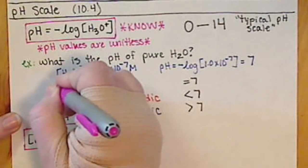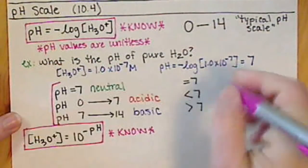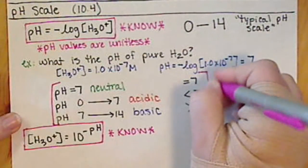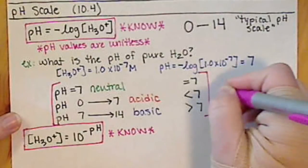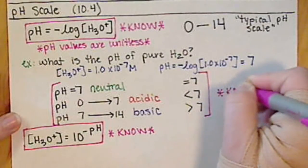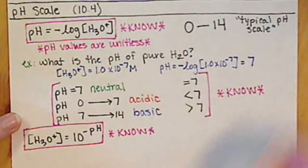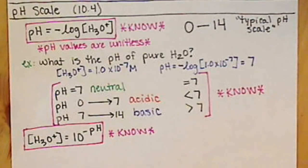Chapter 10 is probably a really good chapter to have a reference sheet of all the equations. You will want to know these ranges of pH values and which is acidic, which is basic, and which is neutral.